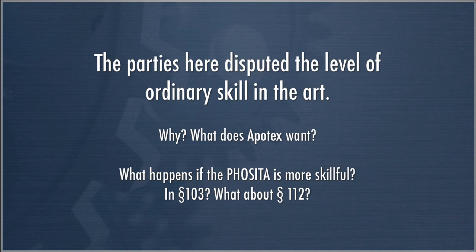Another thing to point your attention to in the Daiichi Sanko case, on page 363, is what the district court did — searching through Federal Circuit opinions dealing with similar technologies and adopting a finding of the level of skill in the art from a similar case. The Federal Circuit is very clear in saying that is impermissible. The holding here is that the person having ordinary skill in the art is a new person for every patent; it varies by patent.